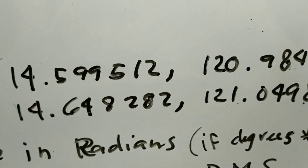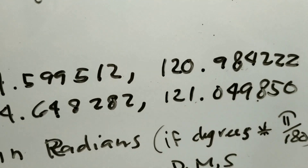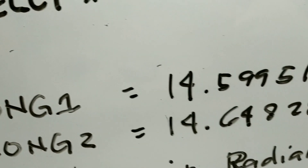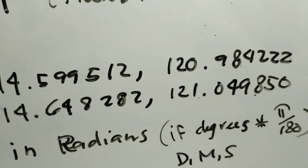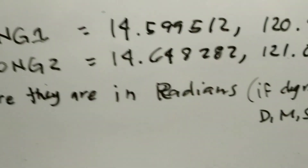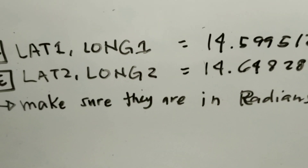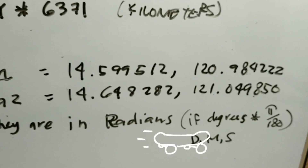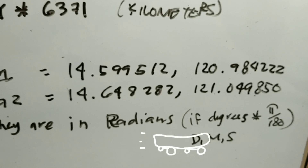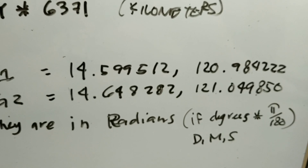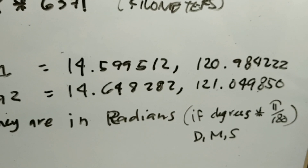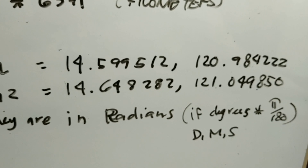The more decimal places, the better — the more accurate. And then we also have Quezon Circle. So we got those coordinates. Make sure they are in radians. If not, you can multiply degrees by pi over 180 — that's degrees, minutes, seconds.